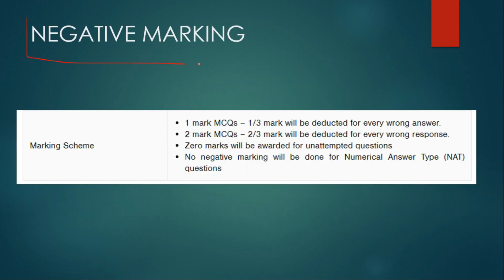There is a negative marking system for this examination. For the three types of questions: if you give a wrong answer for a one-mark MCQ question, 1/3 mark (approximately 0.33 marks) will be deducted. If you give a wrong answer for a two-mark MCQ question, 2/3 marks (approximately 0.67 marks) will be deducted.